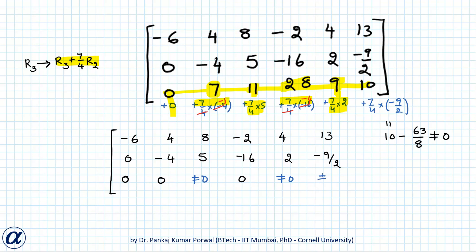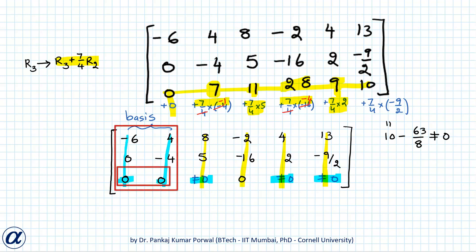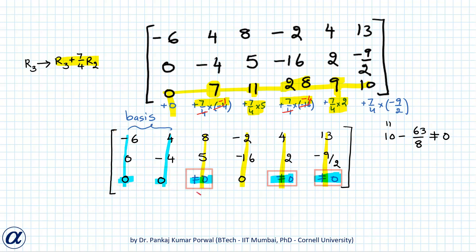We now identify which of the four columns is linearly dependent on our two basis vectors. In the row echelon form, three of the option columns have a non-zero entry in the third row, making them linearly independent of the basis vectors — there is no way to get a non-zero third-row entry from a linear combination of columns that have zeros there. So those three vectors clearly are not linearly dependent on our basis vectors.